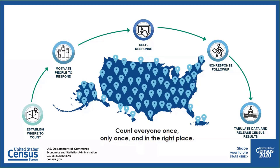Once we have collected all the data, it is then time to tabulate the results. Our data dissemination begins on December 31, 2020, when we deliver the apportionment counts to the President — the numbers used to determine the number of representatives each state gets in Congress. Following that, on a rolling basis, we will distribute the redistricting data to the states, with every state receiving their data by March 31, 2021. After that, additional data tabulations will be released as they are developed.